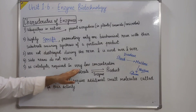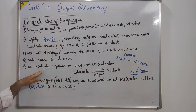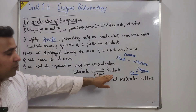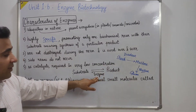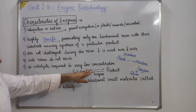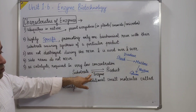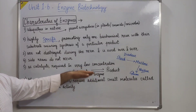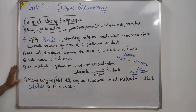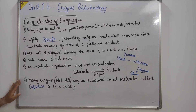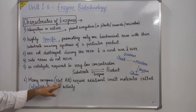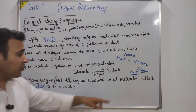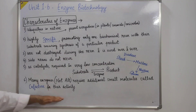As catalysts, enzymes are required in very low concentration. This is a property of a catalyst — it is required in very low concentration. The substrate is converted to a product with the help of the enzyme. The substrate and product are in equilibrium when the enzyme is present in the reaction. Last, many enzymes — not all — require additional small molecules called cofactors for their activity.